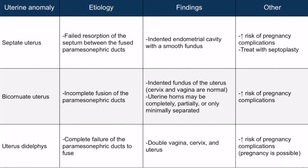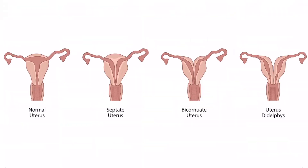The next uterine anomaly is a bicornuate uterus, which is due to incomplete fusion of the paramesonephric ducts. This results in an indented fundus with a normal cervix and vagina. The uterine horns may be completely, partially, or only minimally separated. Just like with other uterine anomalies, there is an increased risk of pregnancy complications. From this image, we can see that a bicornuate uterus is similar to a septate uterus, but the fundus is also indented.